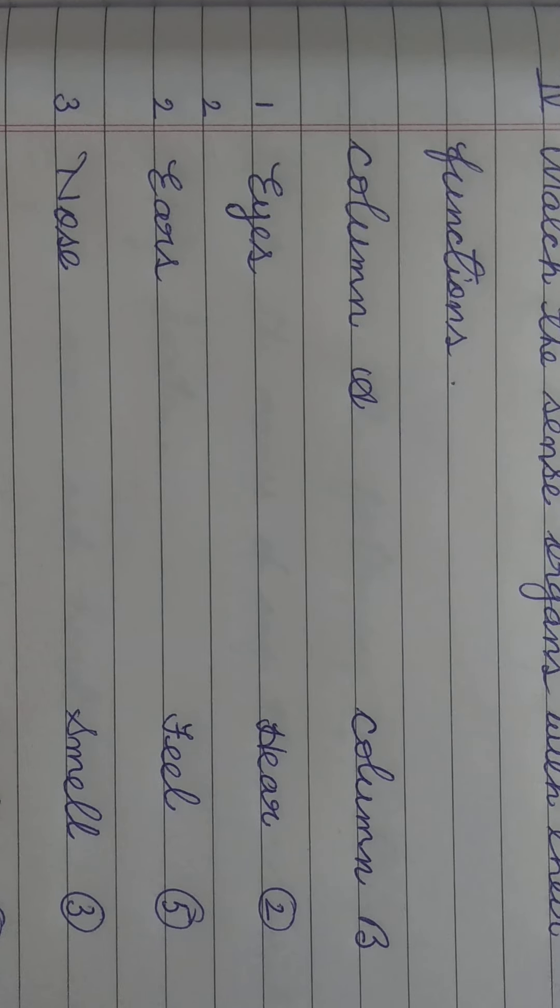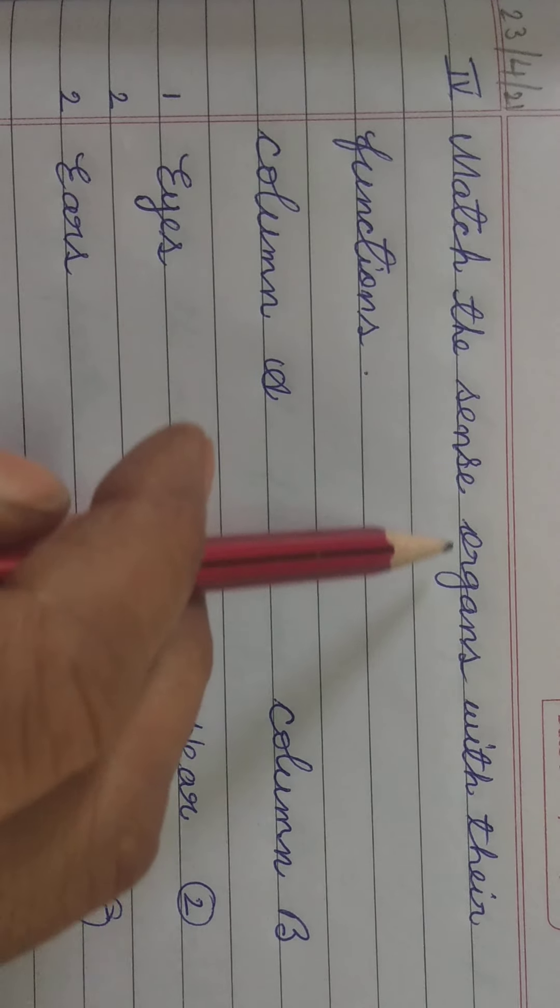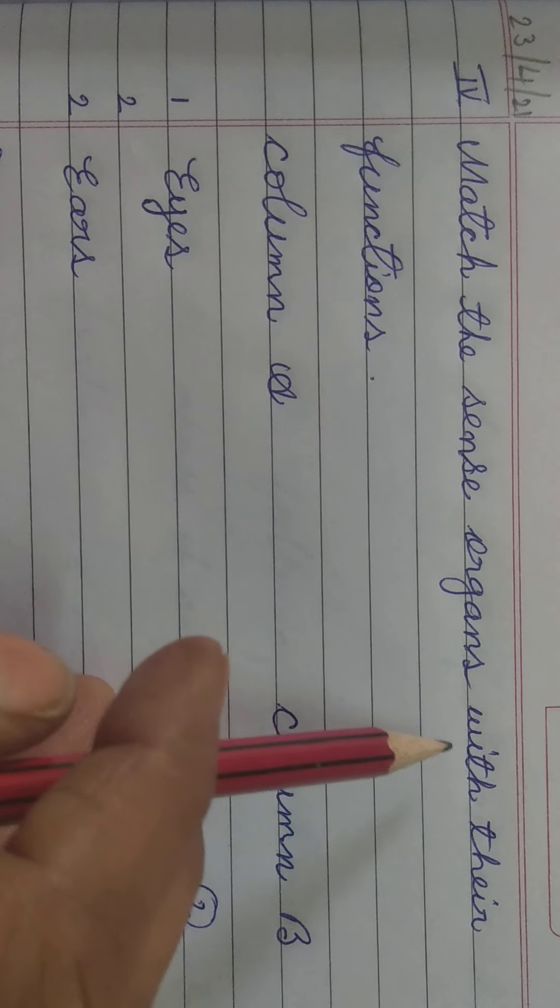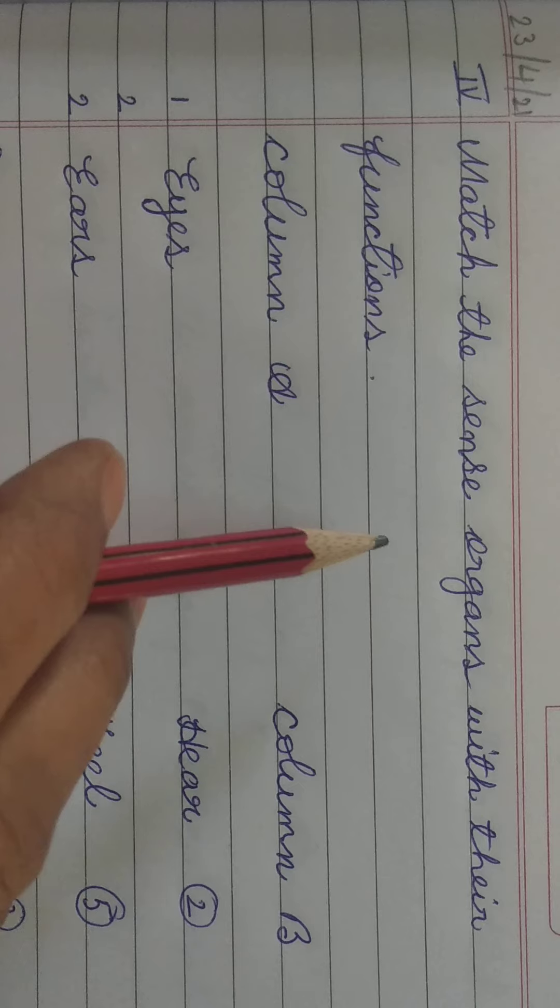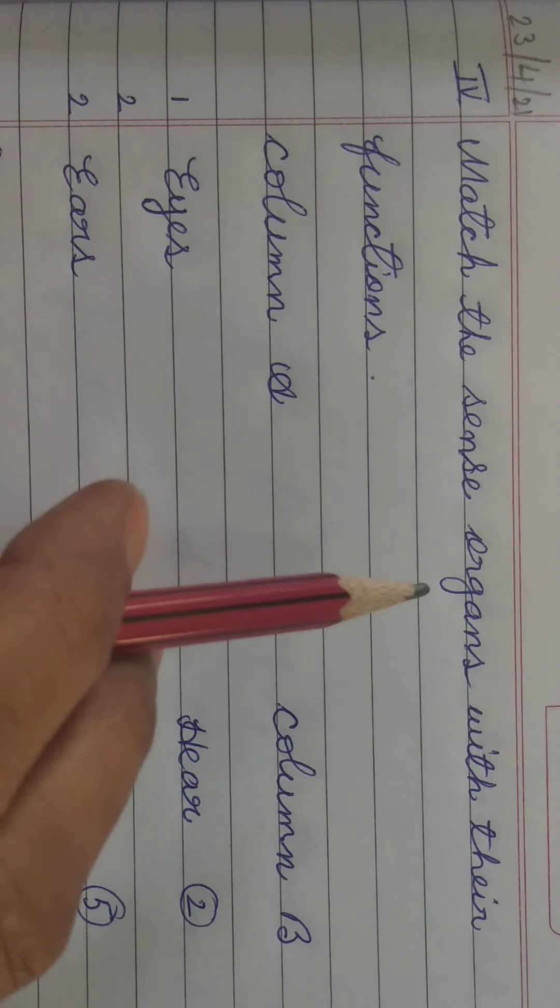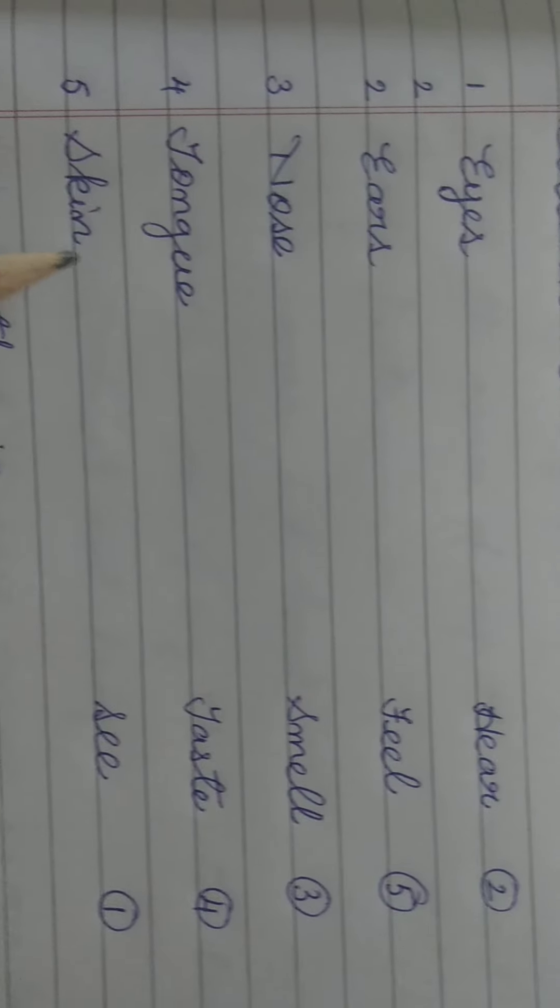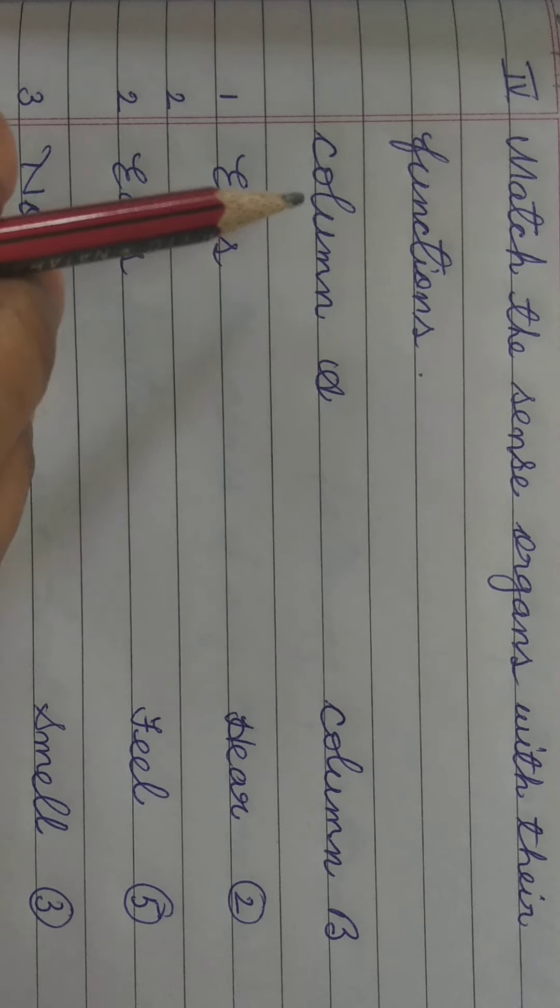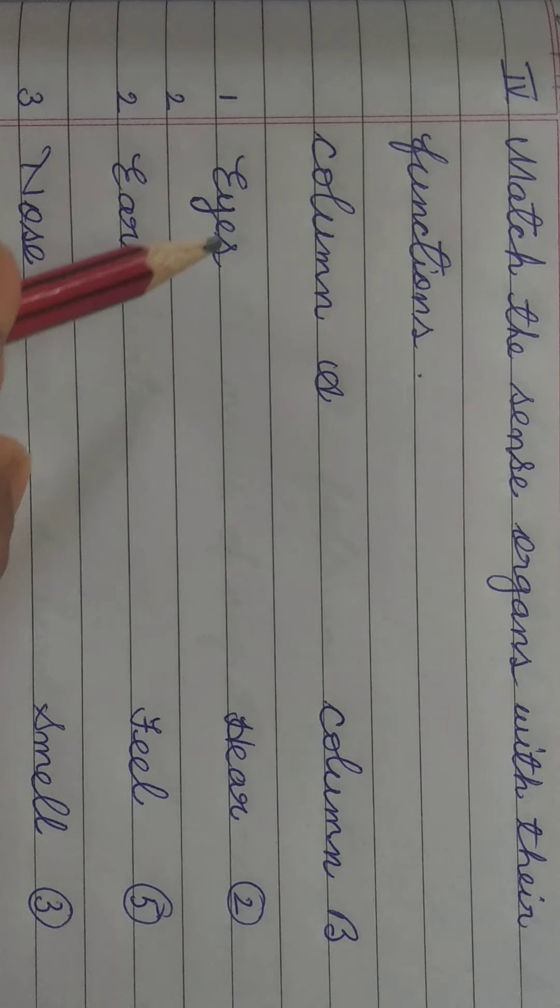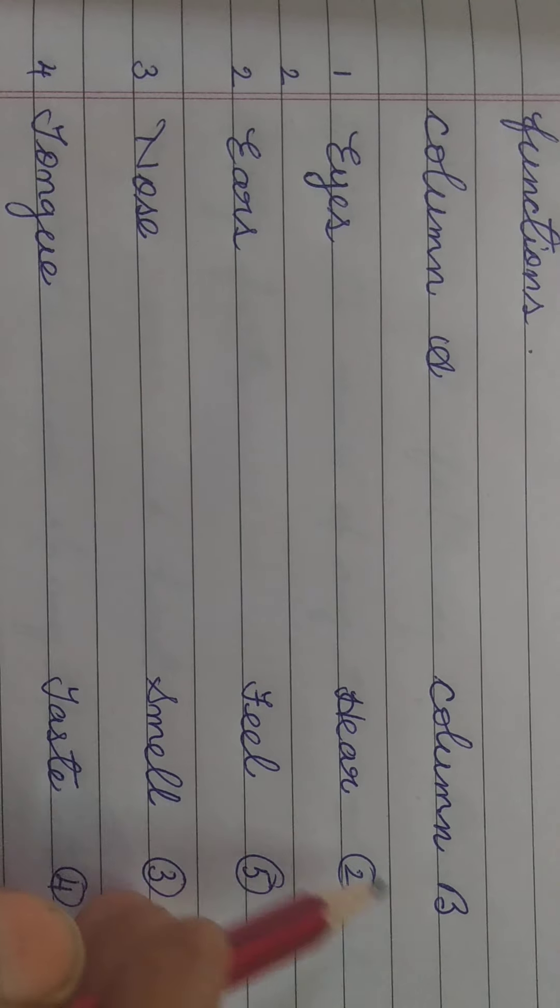Match the sense organs with their functions. What are sense organs dear children? Eyes, ears, nose, tongue and skin are 5 sense organs. Let us read column A means this part, column B means this part.